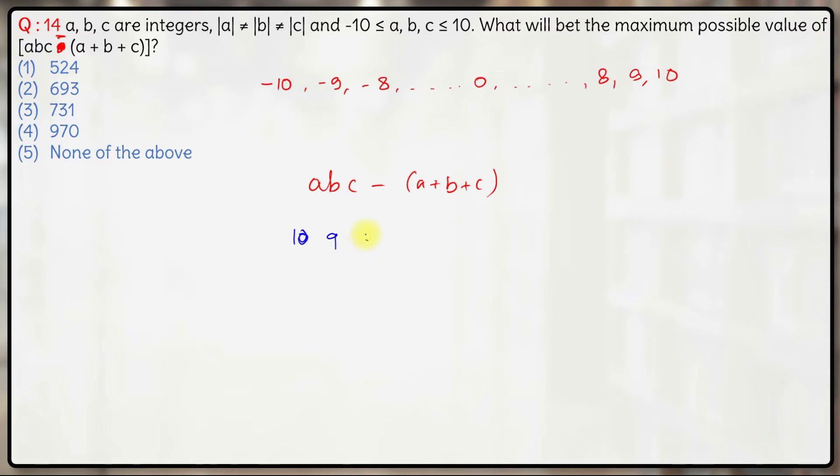The other has 9 and the other has 8. Since the absolute values cannot be equal, hence the absolute values of the three can be 10, 9 and 8.